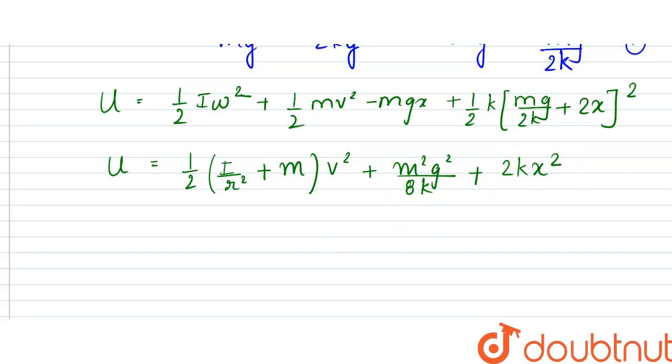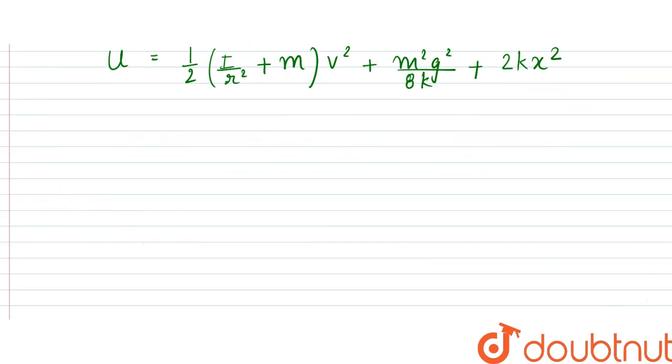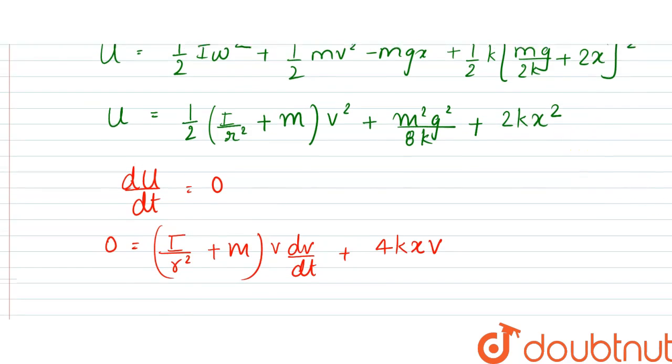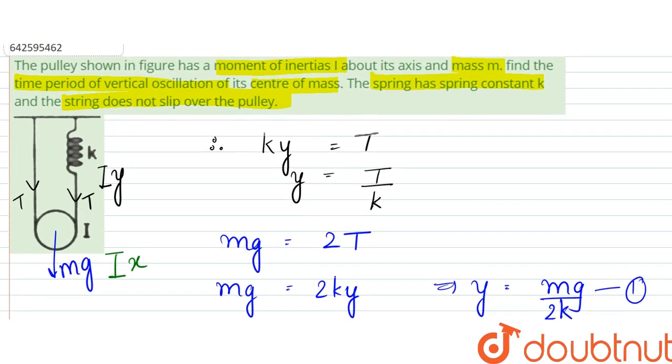From here we can write that now the change in total energy with respect to time should be equal to zero, as the system is conservative. So we can write zero to be equal to I by r square plus m into v dv by dt plus 4kxv. From here dx by dt will be v velocity.